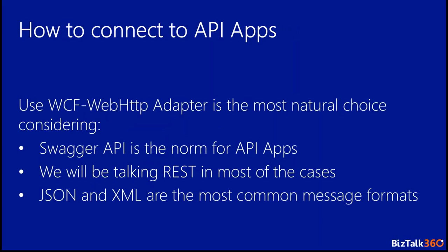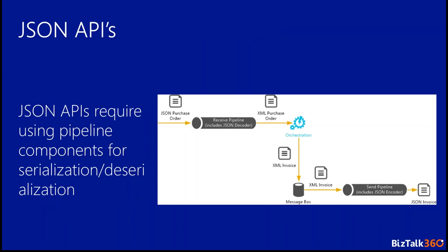Since most API apps today are REST and communicate in JSON and XML and can provide a Swagger definition, the WCF web HTTP adapter is the most natural choice to talk with an API app from BizTalk. One problem that arises from using the web HTTP adapter is that you need to control the HTTP headers being used when communicating with the API app, and that is what needs to be handled in a special way within BizTalk. If you are using a JSON API, you could use the JSON decoder and encoder provided in BizTalk for serialization and deserialization of messages.